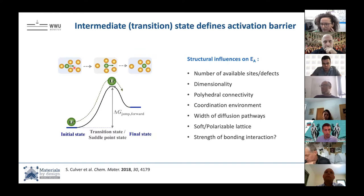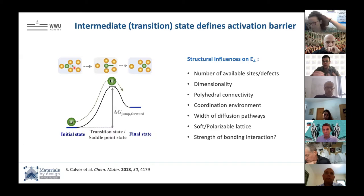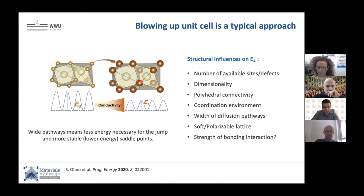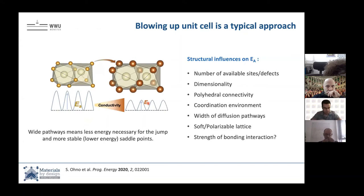The typical approach in solid state chemistry, besides changing the number of available sites, is to change the width of the diffusion pathway bottleneck. If we make this bottleneck broader, the lattice doesn't need to be displaced as much and we should get a lower activation barrier. If these cages are larger and this window is larger, our activation barrier should be lower and conductivity higher. This is the typical paradigm: just blow up the unit cells structurally, and everything will be better. But there's always the question of how much lattice polarizability and the strength of bonding interaction matter.